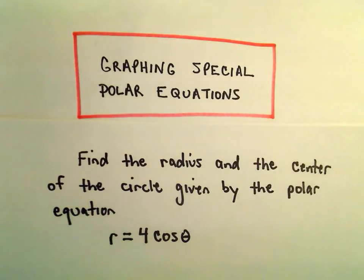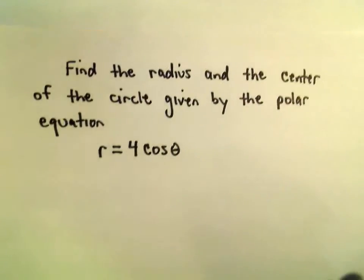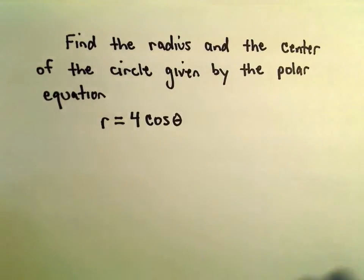Okay, in this video we're going to do a couple more examples related to graphing polar equations. In this equation, we've got r equals 4 cosine theta. What we want to do is find the radius and center of the circle, because it's going to turn out this is going to be a circle.